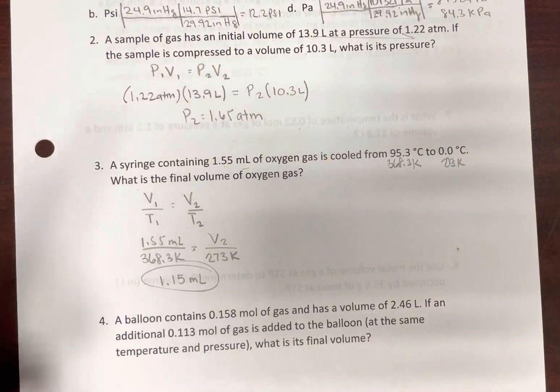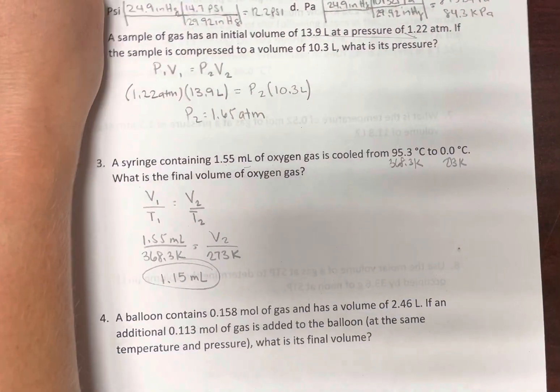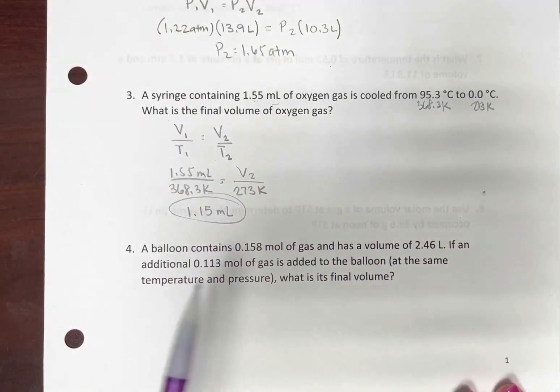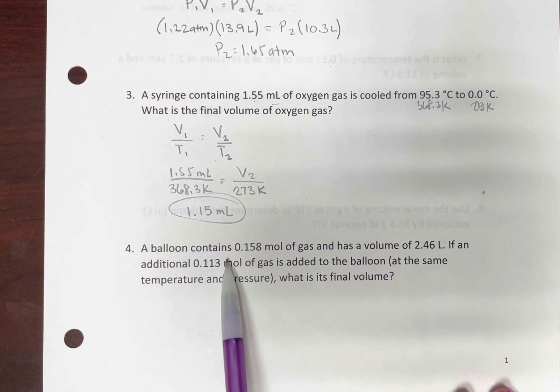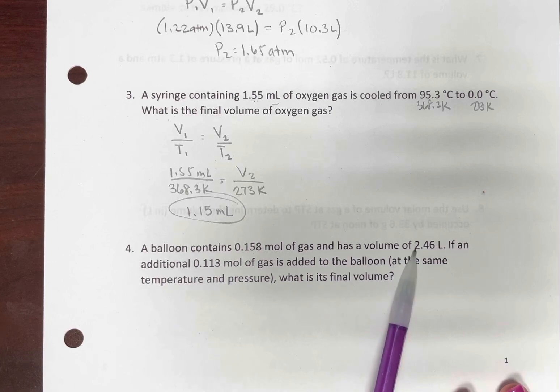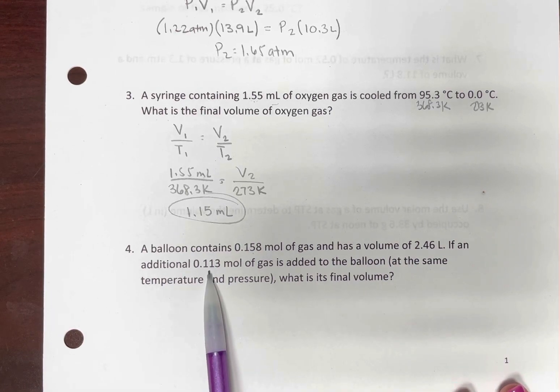A balloon contains this many moles. Here's its volume, and we want to add some more moles, and we want to know the new volume. But here we're maintaining the same temperature and pressure. So this is Avogadro's Law.